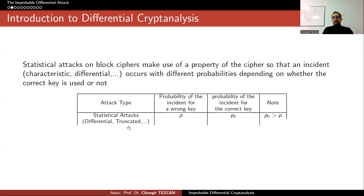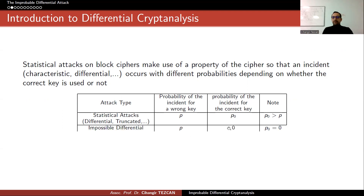For differentials and truncated differentials, the distinguisher works with probability p for the random permutation and with probability p0 for the cipher we are trying to distinguish over r rounds. This probability p0 is valid for the correct key, and p is valid for all wrong candidate keys. So here p0 is larger than p. In the impossible differential case, that characteristic works with some probability p for a random permutation, but we can never observe it for the correct key — so p0 is exactly zero, making it less than p.